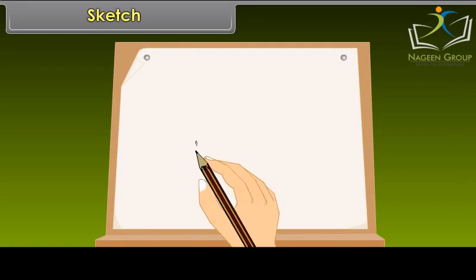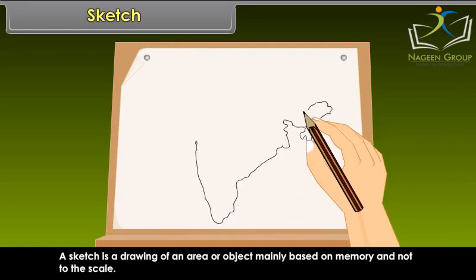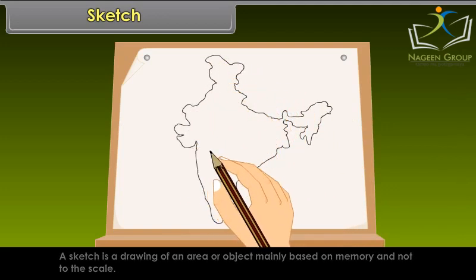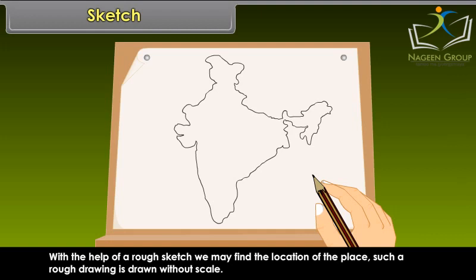A sketch is a drawing of an area or object mainly based on memory and not to scale. Sometimes a rough drawing of an area is needed to know where a particular place is located with reference to other places. With the help of a rough sketch, we may find the location of the place. Such a rough drawing is drawn without scale.